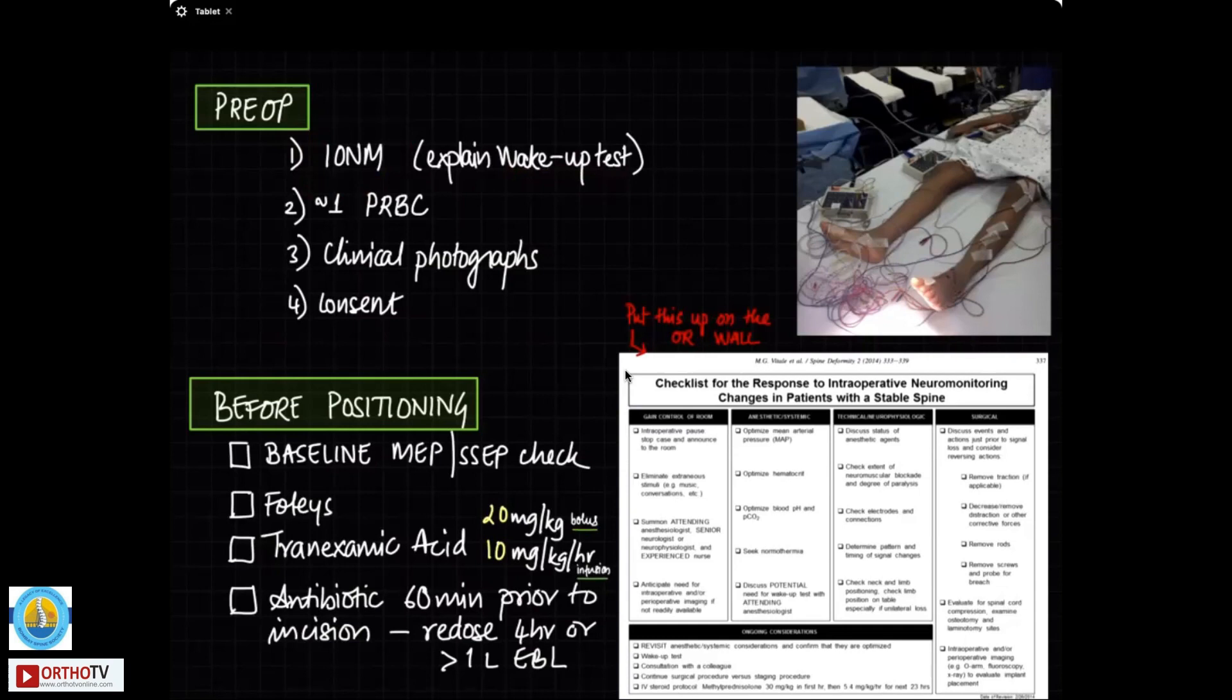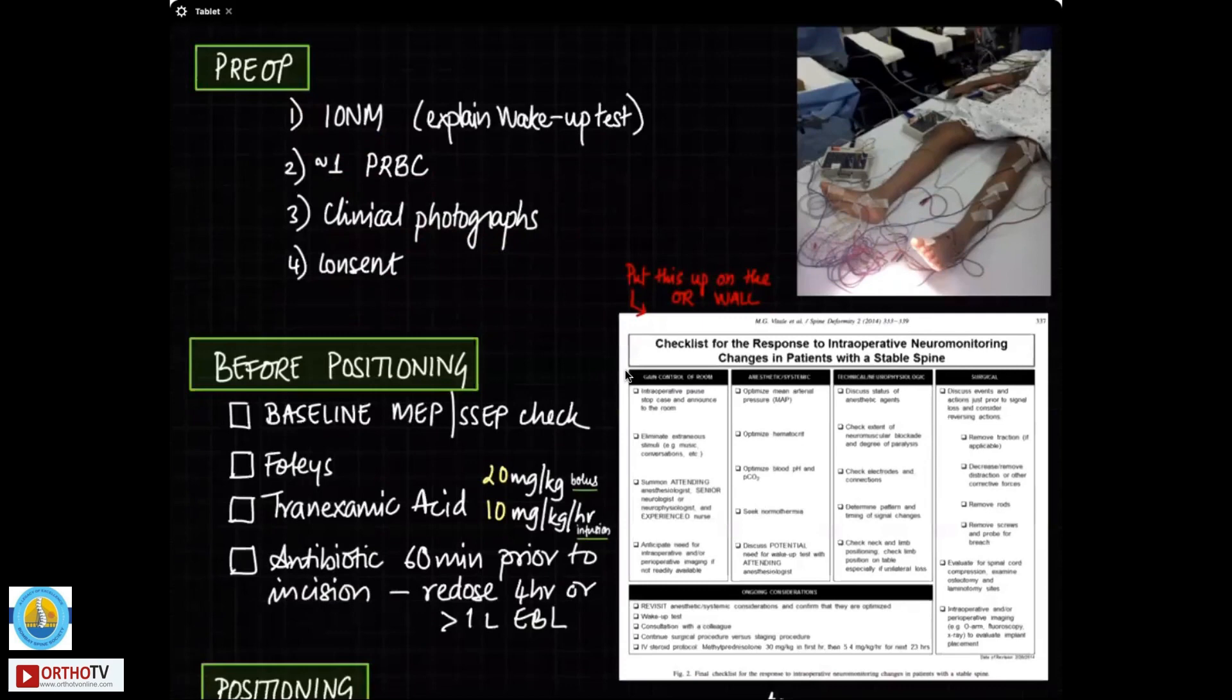For a usual AIS patient, I usually reserve one packed RBC. Make sure that you have taken the clinical photographs of the patient before surgery and the patient is adequately consented along with the parents.